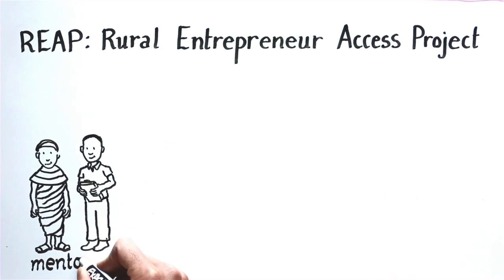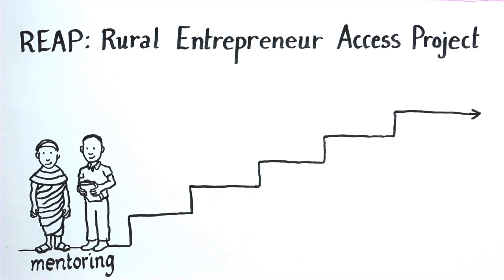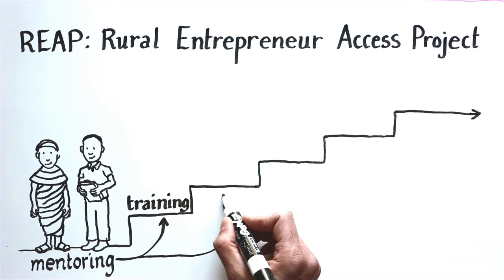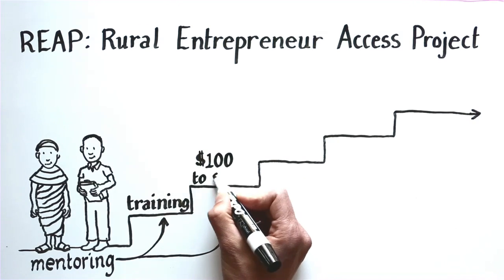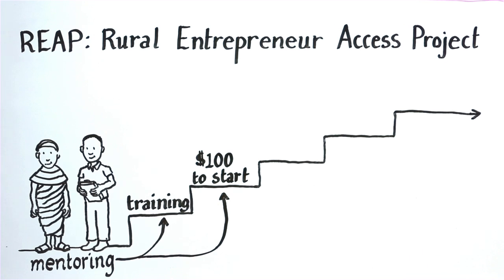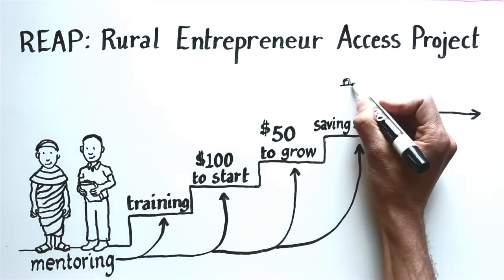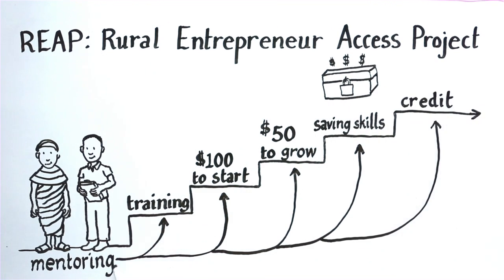REAP provides two years of mentoring by local BOMA village mentors, training in basic business skills, a startup grant of $100 to get the business going, a second grant of $50 to help the business expand, training in basic savings skills, and access to credit through BOMA savings groups.